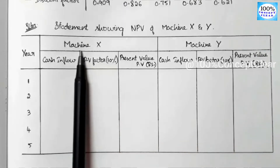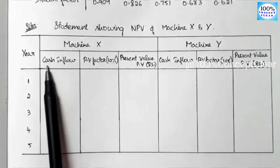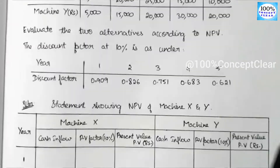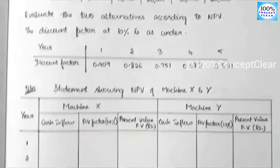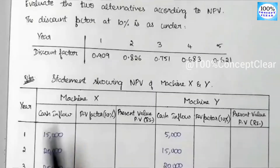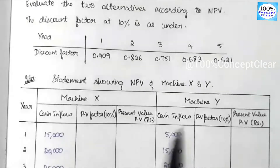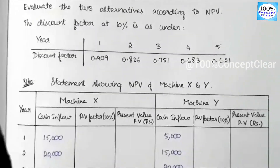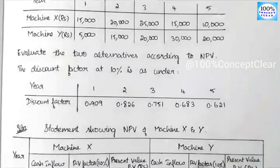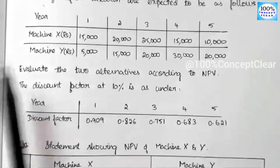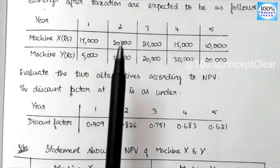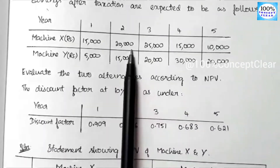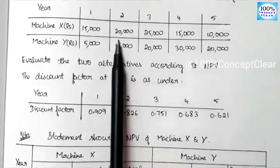For machine X, the cash inflow values are taken from the question. Machine X: first year is 15,000 and second year is 20,000. Machine Y also has its own cash inflows from the question.